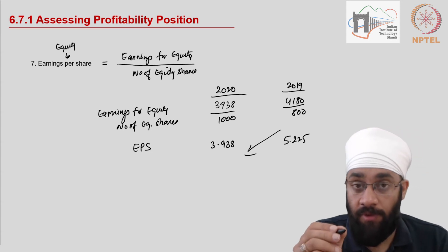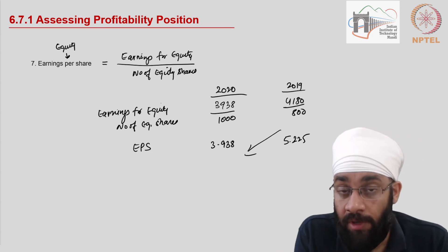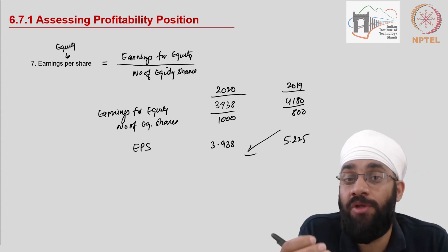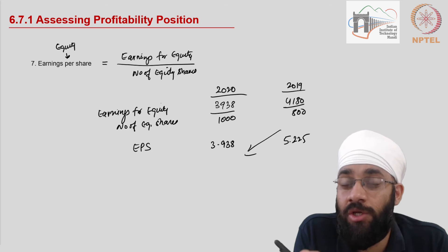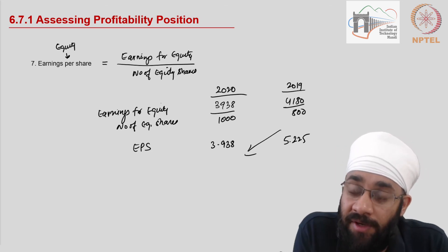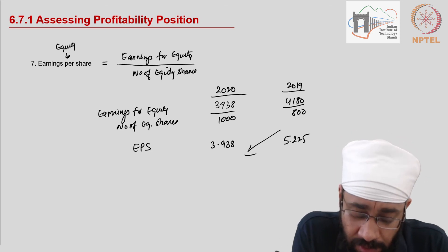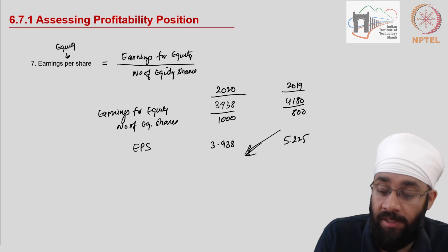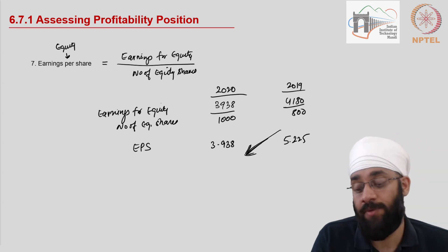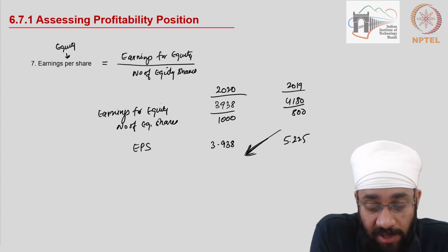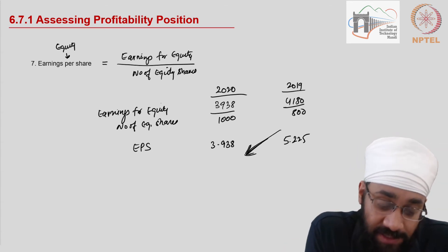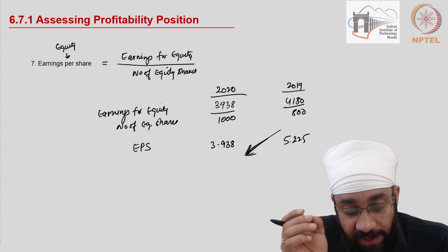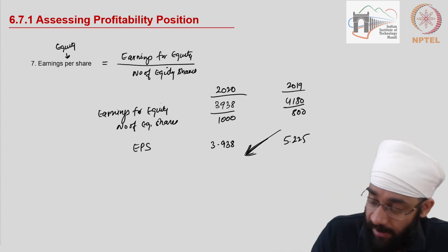Clearly EPS is also going down. Per share, the earnings available to equity shareholders have deteriorated. This is not a good sign for the company, as earnings are expected to go up year on year. This is the seventh indicator.